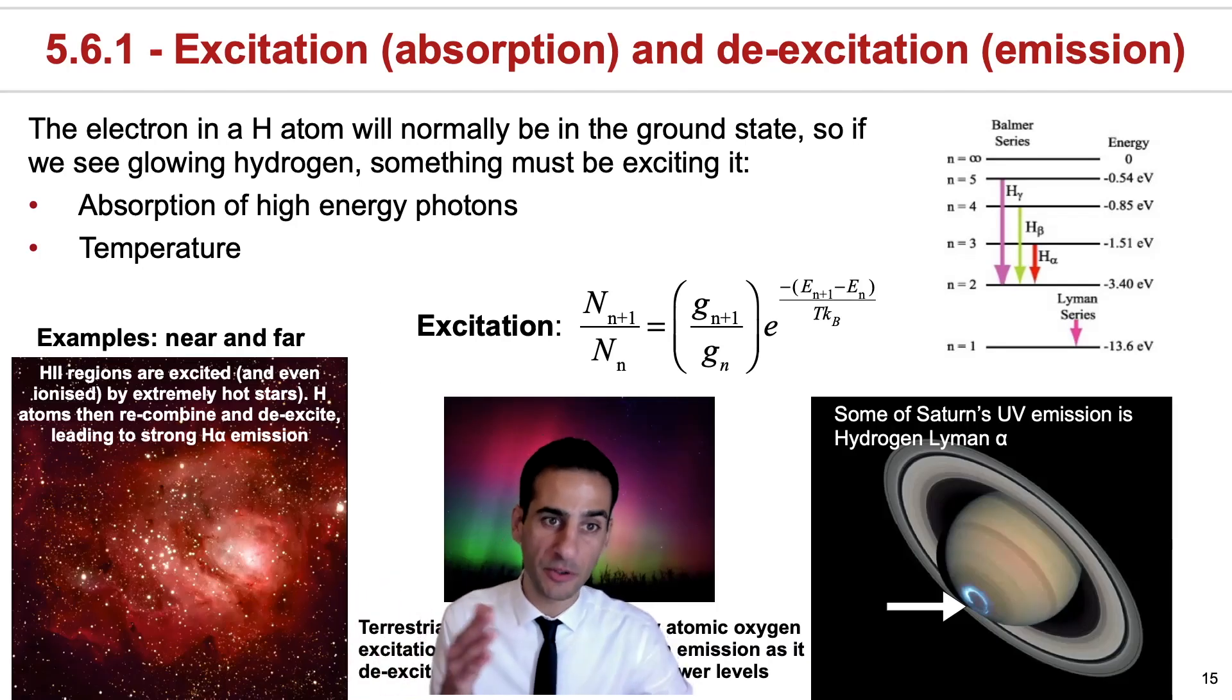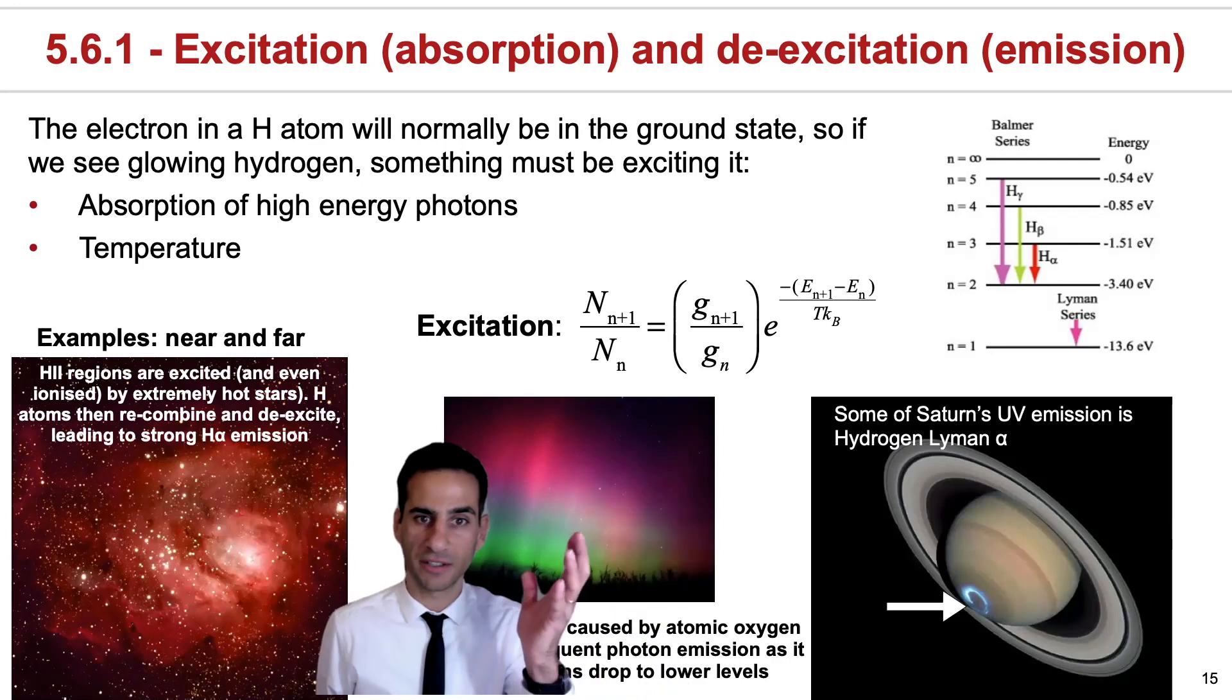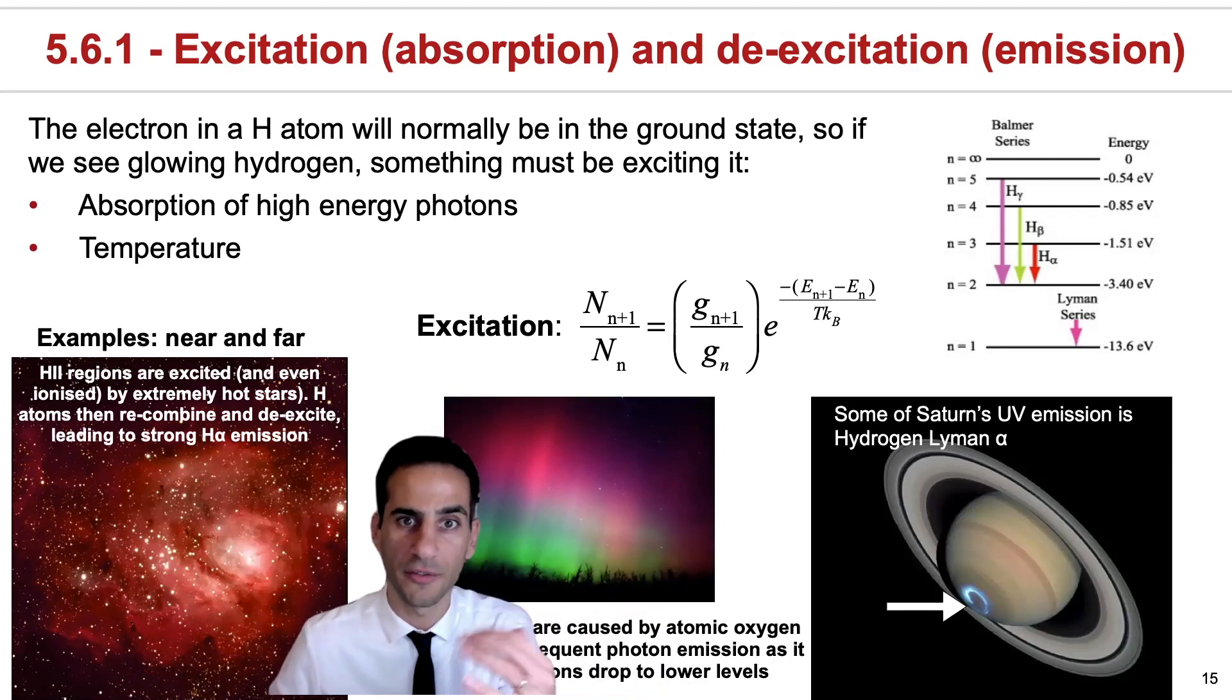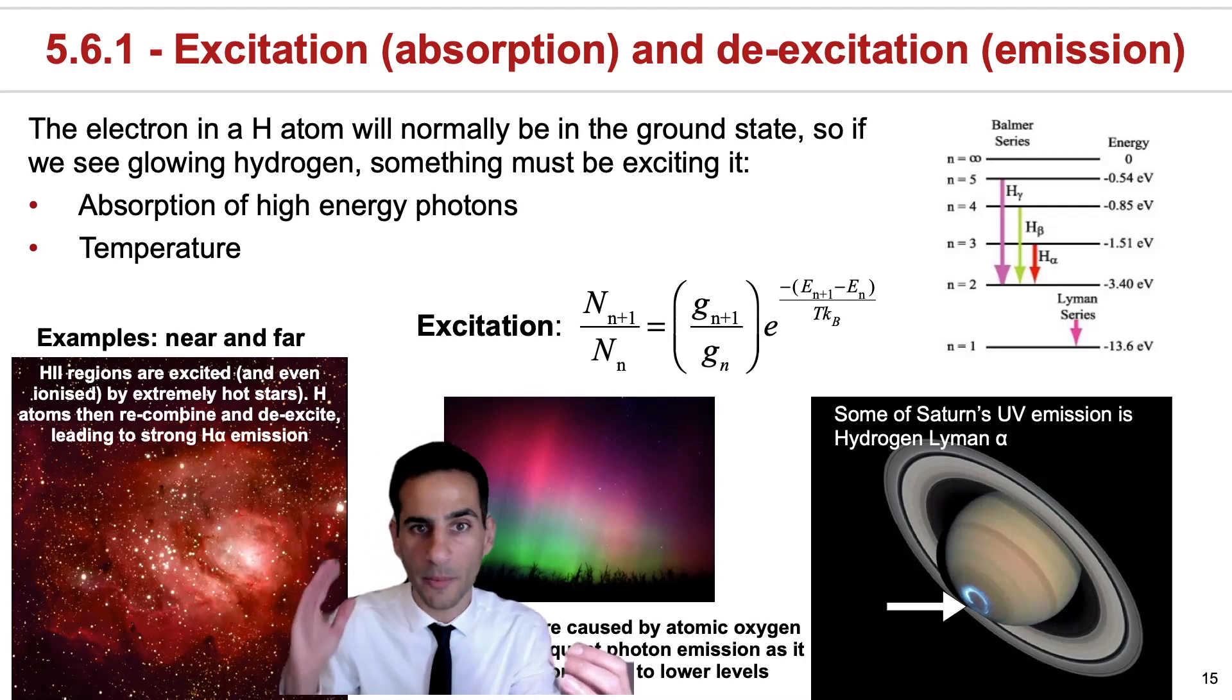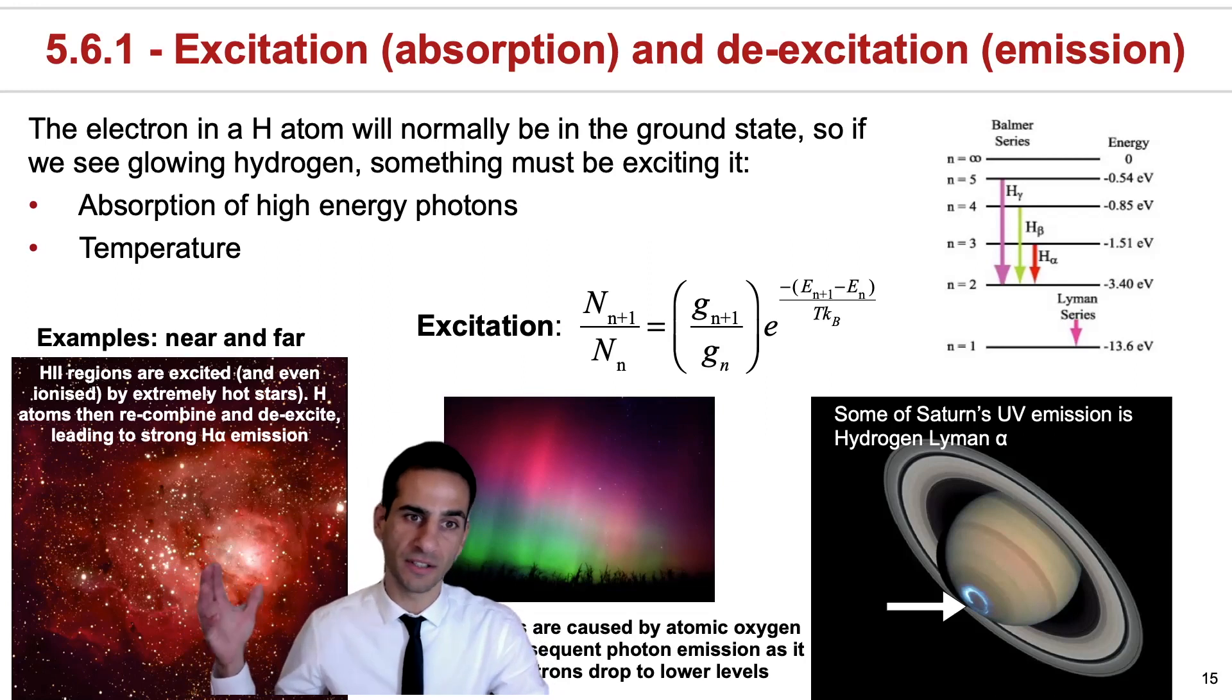There are plenty of examples, both near and far. For example, on Earth, we can actually find auroras that result from the de-excitation of oxygen atoms once they're bombarded by the solar wind. We can also find H2 regions. And I told you already that this red, this typical red, comes from H-alpha emission.